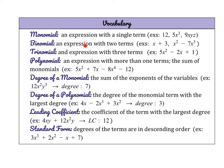A binomial is an expression with two terms — two terms separated by a sum or difference. A trinomial is an expression with three terms. A polynomial is an umbrella term — an expression with more than one term. So a binomial is a type of polynomial, and so is a trinomial. It covers anything with more than one term, and it's essentially a sum or difference of monomials.